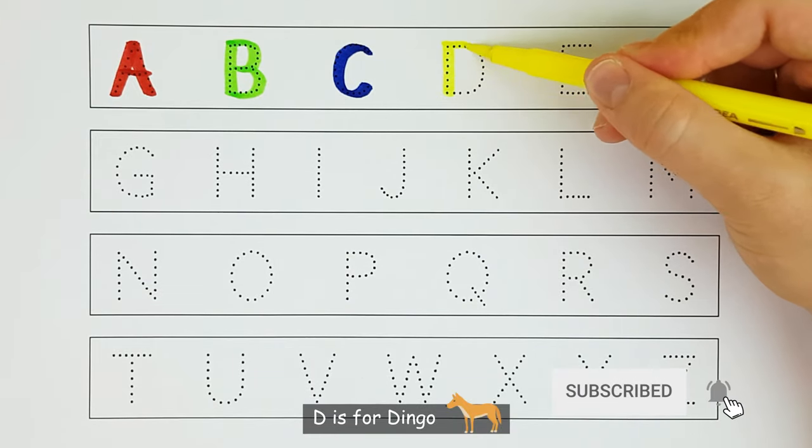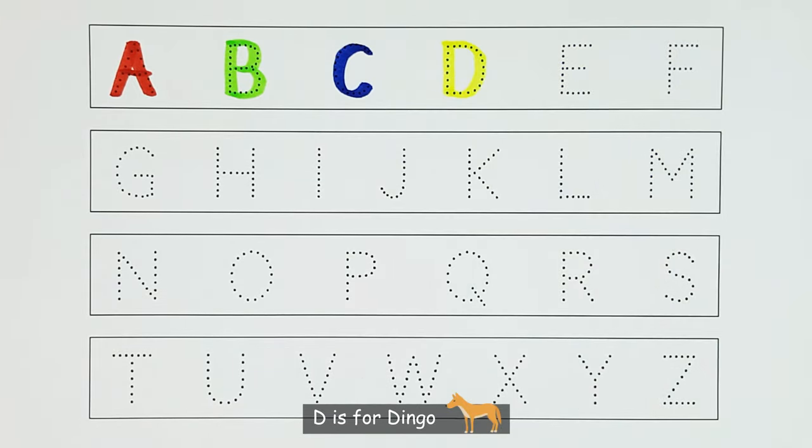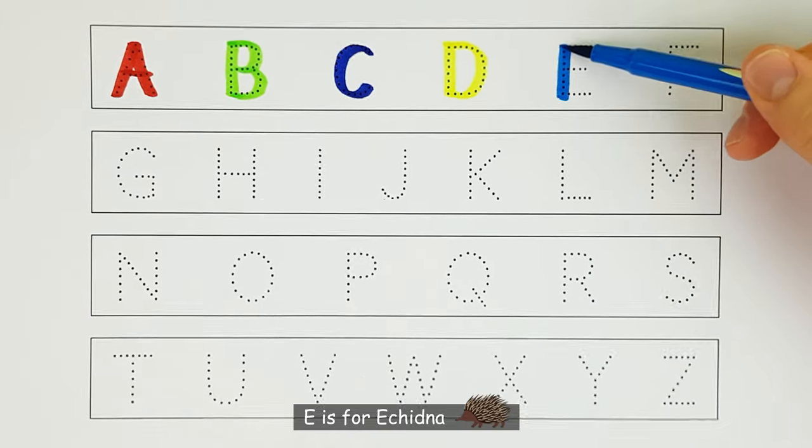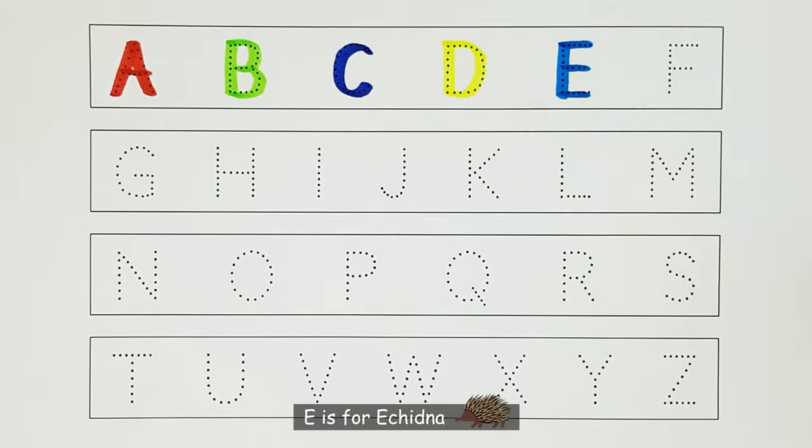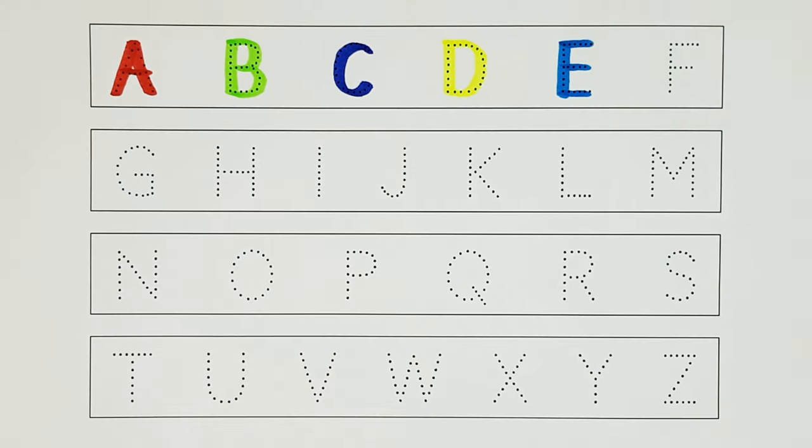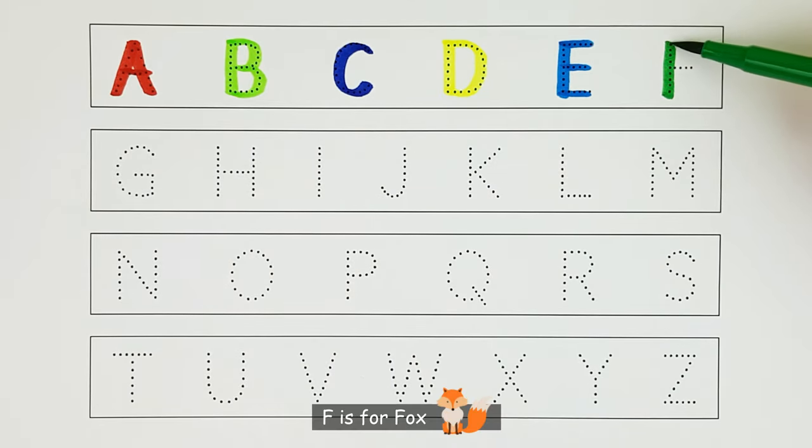D. D is for dingo. D. E. E is for echidna. E. F. F is for fox. F.